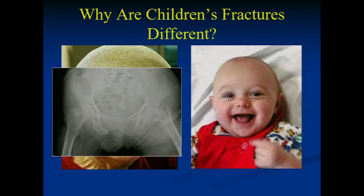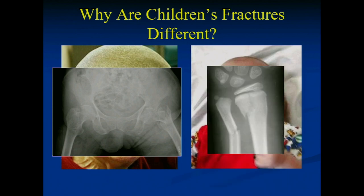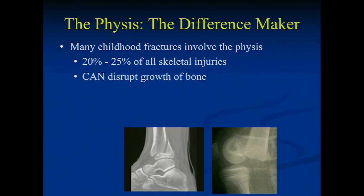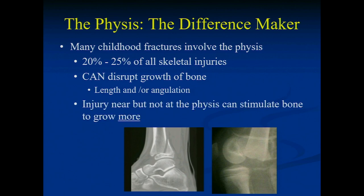Why are children's fractures different? Kids have a growth plate — the physis — and that makes a huge difference in management. Growth plate involvement occurs about 25% of the time and doesn't always disrupt bone growth; most of the time it doesn't. Growth disruption can affect length or angulation, and sometimes injury near the growth plate can stimulate too much growth — younger kids who fracture their femur can actually end up with a longer leg due to increased inflammation stimulating the growth plate.